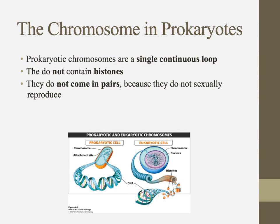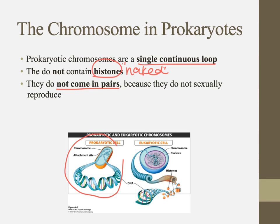Let's talk about prokaryotes first. In prokaryotes, they have one single continuous loop — their chromosome is circular. It's often referred to as a naked chromosome or naked DNA, because it doesn't contain histones. It's not wrapped around those proteins like in a eukaryotic cell. And finally, it doesn't come in pairs — it's singular.